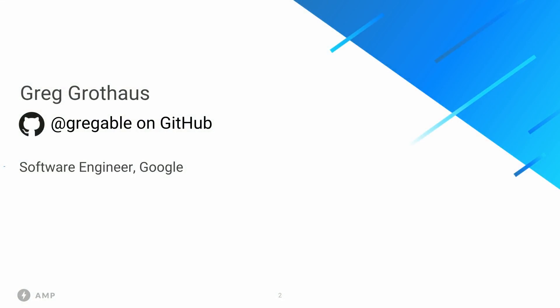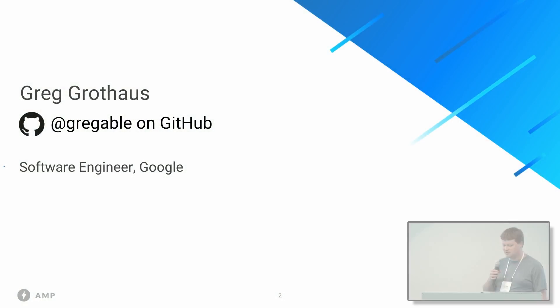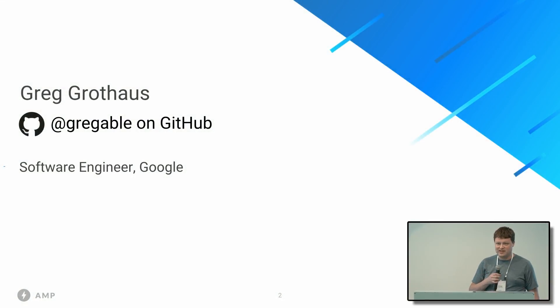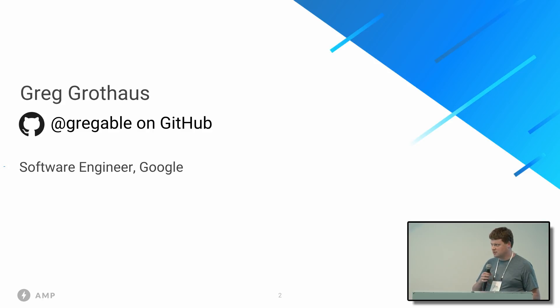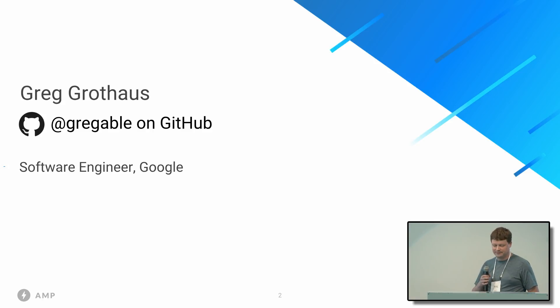So I'm Greg Grothouse, Greggable on GitHub. You may have seen me around. I'm TL of the AMP team that works on the AMP validator, as well as several things within the AMP cache. Today, we're going to be talking about a particular effort that we're working on for the AMP cache called packaging.